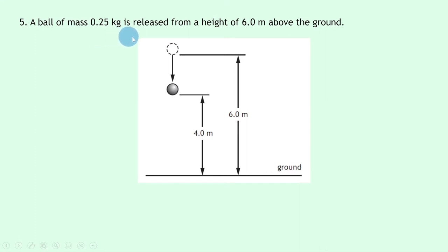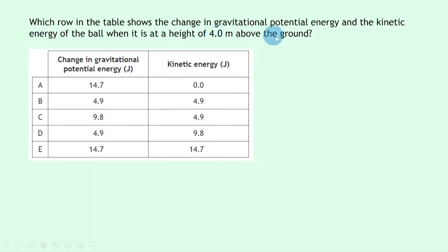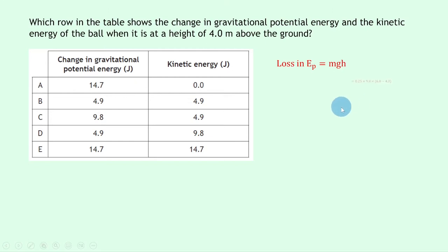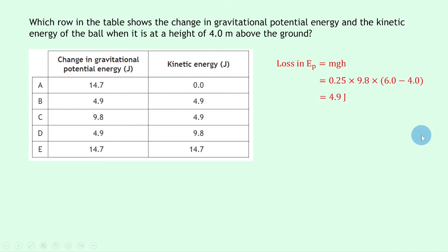Question 5 involves a ball of mass 0.25 kg released from 6.0 m above the ground. We need the change in gravitational potential energy and kinetic energy at 4.0 m height. Loss in Ep = mgh = 0.25 × 9.8 × (6.0 − 4.0) = 4.9 joules. By conservation of energy, the gain in kinetic energy equals the loss in gravitational PE, so Ek = 4.9 joules as well. This gives answer B.